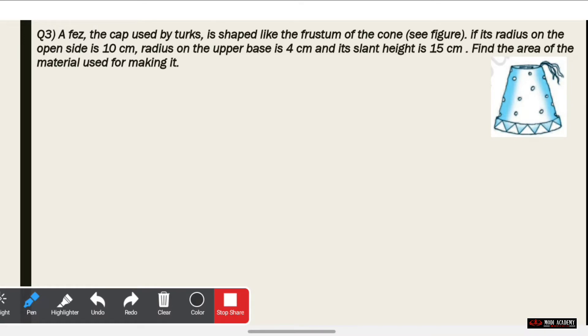Question 3: A fez, the cap used by Turks, is shaped like the frustum of a cone. If the radius on the open side is 10 cm, the upper radius is 4 cm, and the slant height L is 15 cm, find the area of material used.